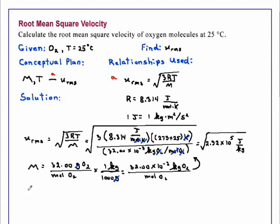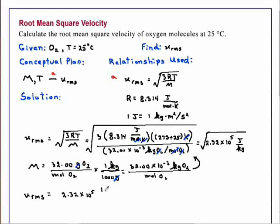Continuing our calculation, the root mean squared velocity equals the square root of 2.32 times 10 to the fifth. Making the substitution that one kilogram times meters squared per second squared equals one joule, this is divided by kilograms.